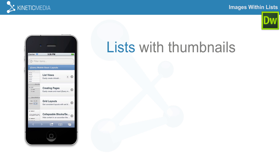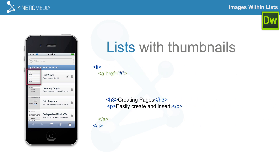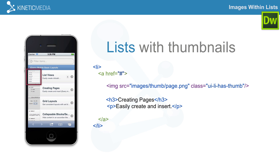You have to prepare the images to the correct sizes for thumbnails before you bring them in, but once you have them brought in you can use them within your list. It's really simple to use these thumbnails within your different list views. We already know how to create a list and even a description within the list. We have a list item where the href links to a page, an h3 tag for the title, and a paragraph tag for the description. To create a thumbnail, the only thing we need to add is an image reference with a source location. But then it also has a class — and this is the key — this is what's going to position it correctly inside of jQuery Mobile.